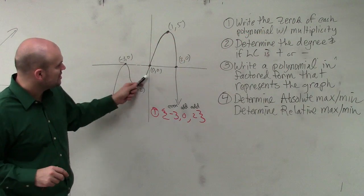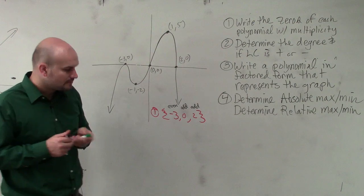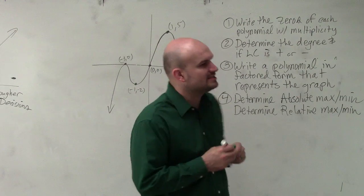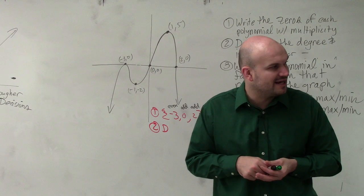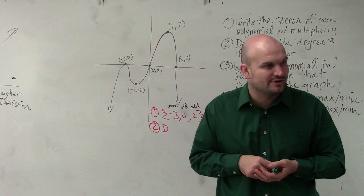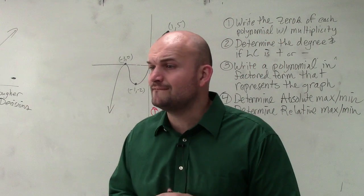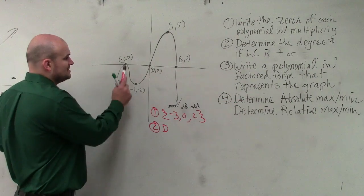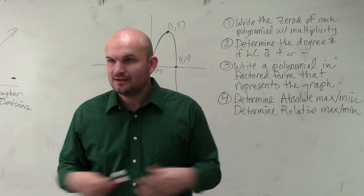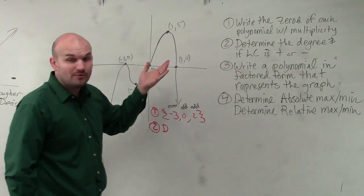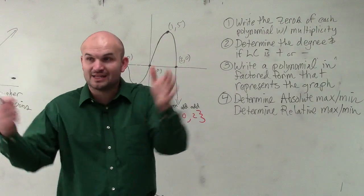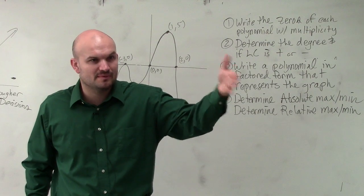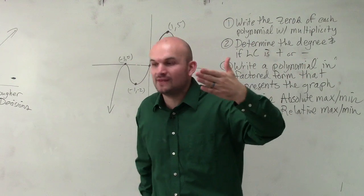Because it crosses at zero, right? Step number two, determine the degree and the leading coefficient. There's two ways to find the degree. Deanna, you said one way was to count all the x-intercepts, right? There's 1, 2, 3. This has a degree of 3. That is one way to do it. However, the other way was to count all the turning points. The number of turning points was one less than the degree. So if I count all the turning points and add one, that will give me the degree.